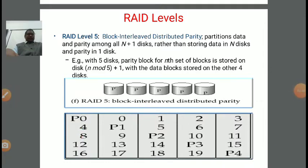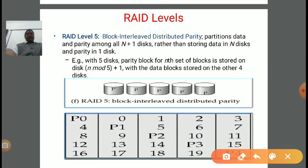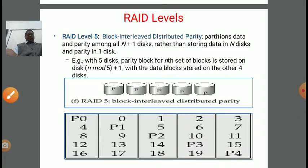In this manner, we can process the data blocks and parity bits. In the third disk, the data are 1, 5, then parity bit P2, then 14 and 18 as data. Next disk has 2, 6, 10, then P3 as the parity bit, and 19 as data. The last has 3, 7, 11, 15, and P4 as the parity bit. In this manner we can understand the RAID level 5 data and parity bit combination.